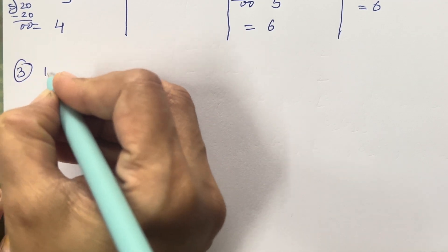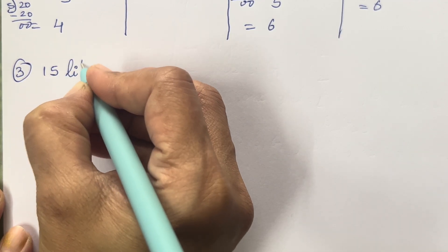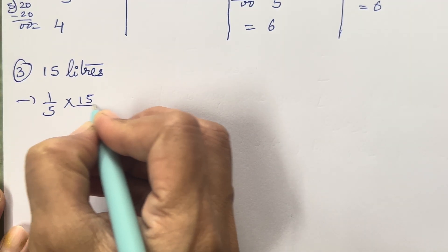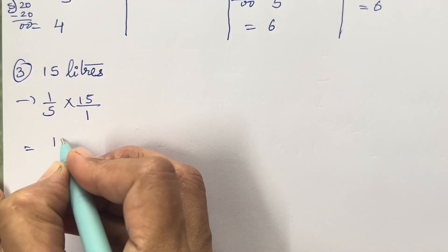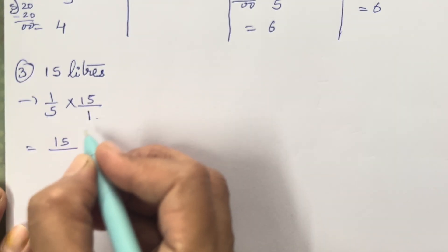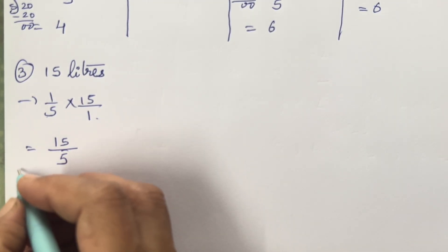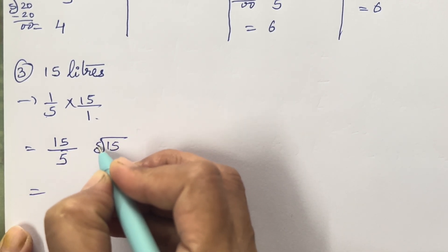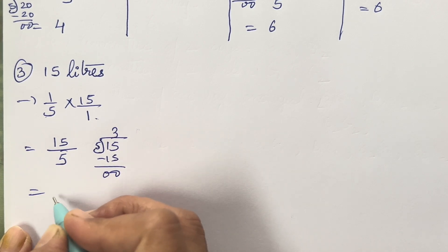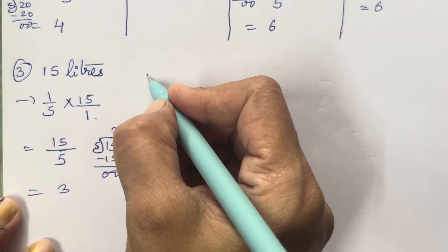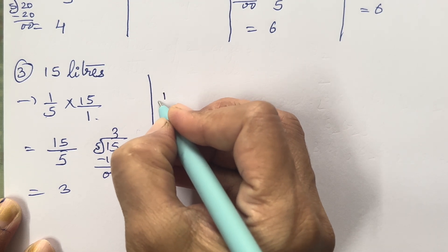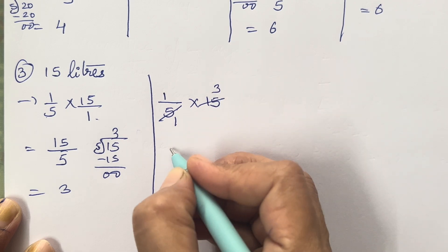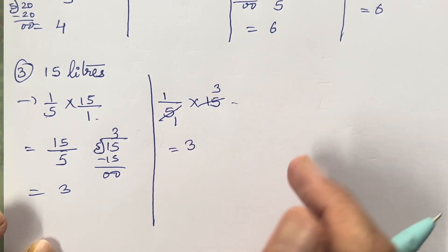Third: 15 liters. So 1/5 into 15 — 1 into 15 is 15, 5 into 1 is 5. Divide: 5 threes are 15 — answer is 3. Using the shortcut method: 5 ones are 5, 5 threes are 15 — answer is 3.